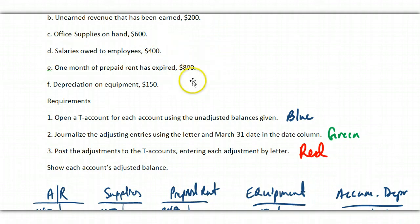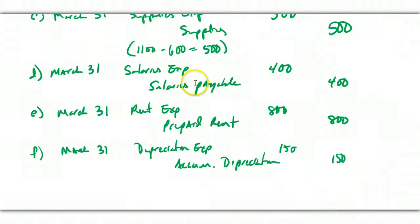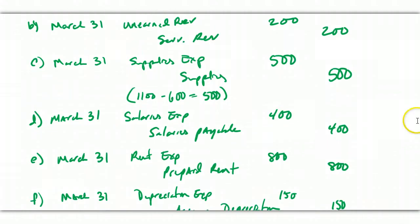All right, salaries owed to employees, $400. I debit salary expense. I credit salary payable for the $400. That's always the adjusting entry for salaries expense. This is always the adjusting entry for supplies expense.